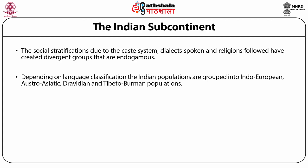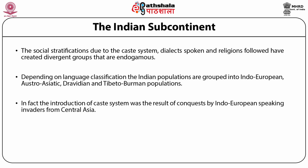Depending on language classification, Indian populations are grouped into Indo-European, Austro-Asiatic, Dravidian and Tibeto-Burman populations. While tribal populations fall into all four groups, non-tribal groups speak Indo-European or Dravidian languages only. Most populations of India speak languages of the Indo-European family, which also includes languages spoken by Western Eurasians.